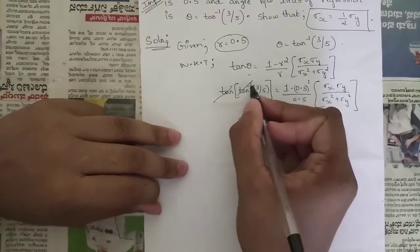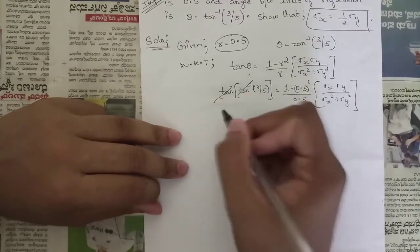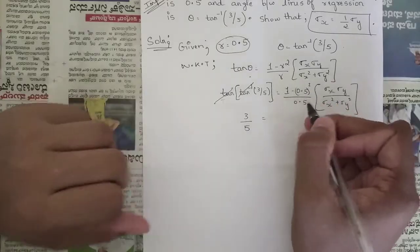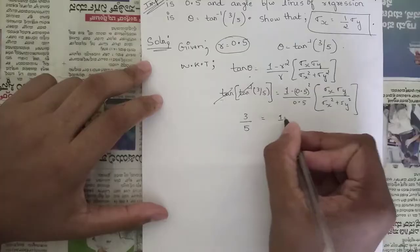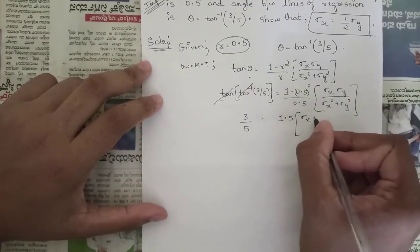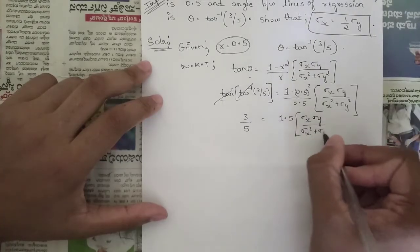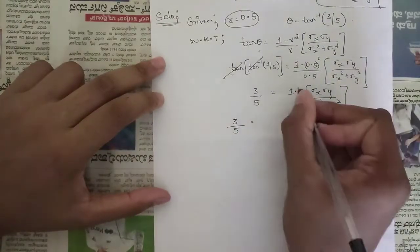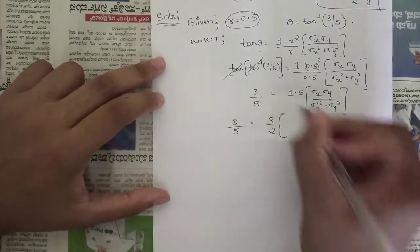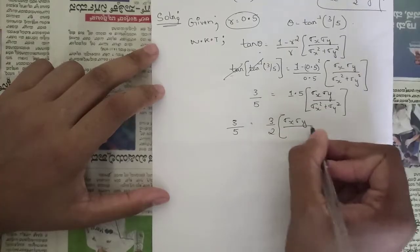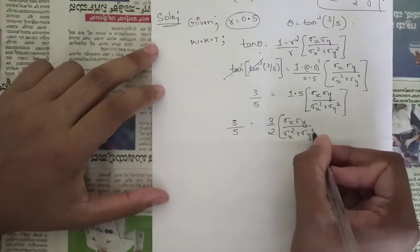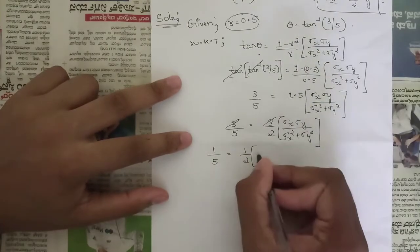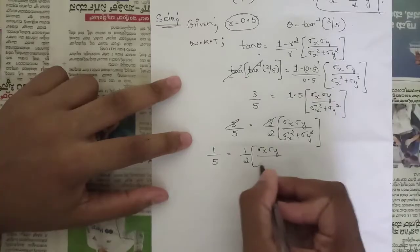Since tan and tan⁻¹ cancel, only 3/5 remains on the left. On the right, solving (1 - 0.5²) / 0.5 gives 1.5. So we get 3/5 = 1.5 · (σx · σy) / (σx² + σy²). Cancelling the 3 from both sides gives 1/5 = (1/2) · (σx · σy) / (σx² + σy²).